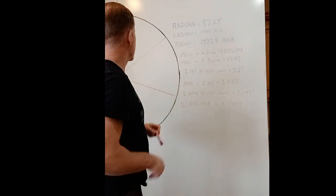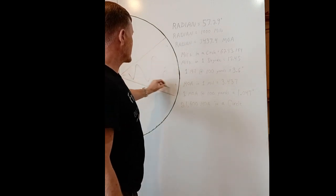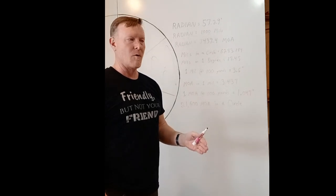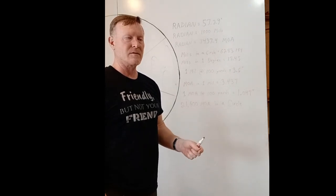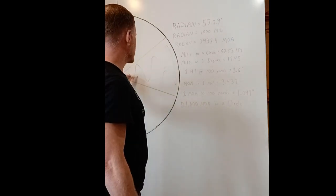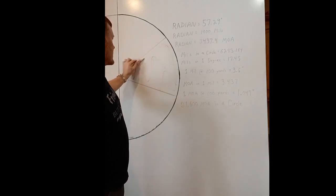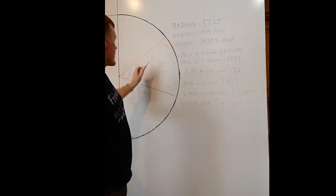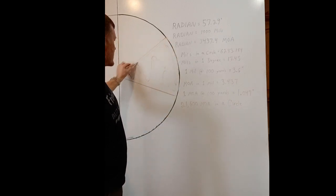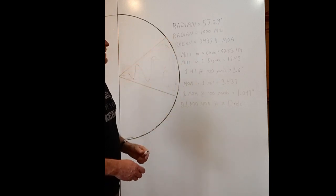All right. So one radian split into a thousand sections is a mil or an MRAD or a milrad or a milradian. It's all the same thing. I just wanted to point out what exactly a radian is. And it's this area right here. 57.29 degrees of angle on this arc when you subtend the radius out here on the circumference. A radian split into a thousand equal pieces, a mil or a radian.